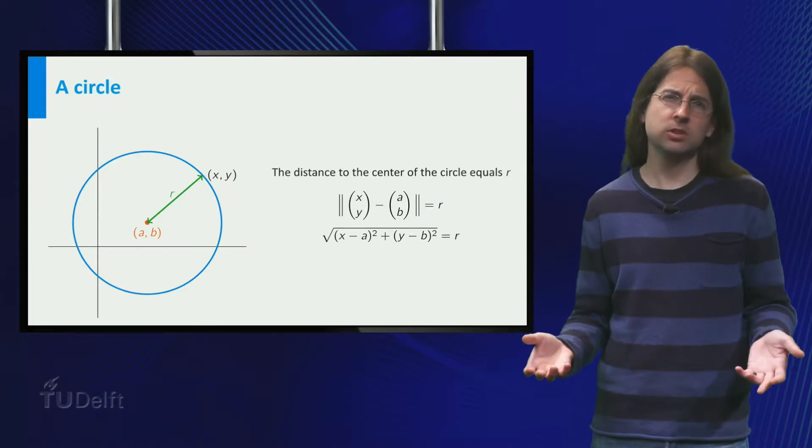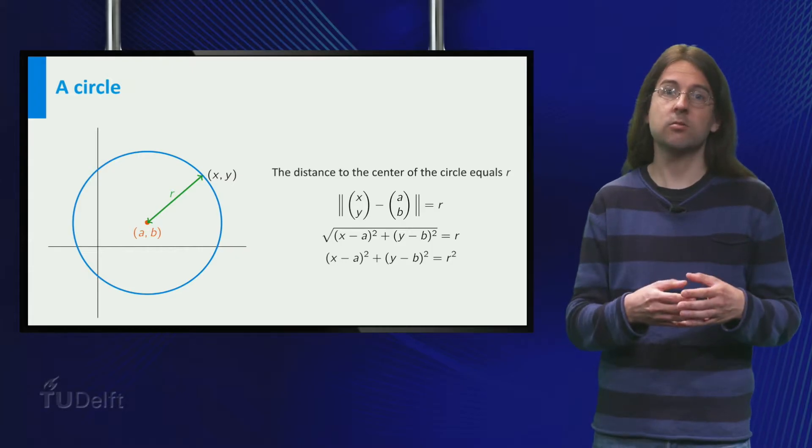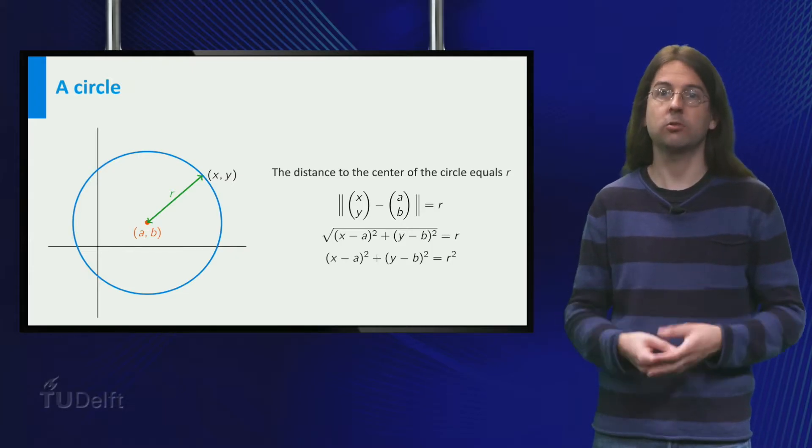If we don't like square roots, we square the formula to obtain x minus a squared plus y minus b squared equals r squared.